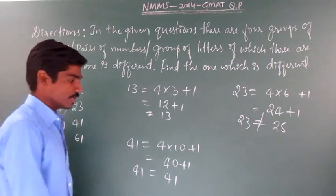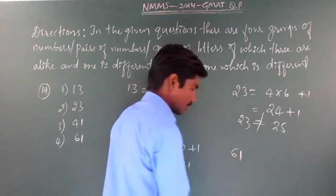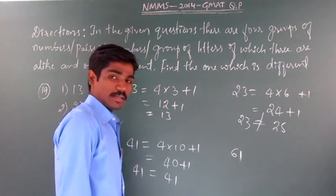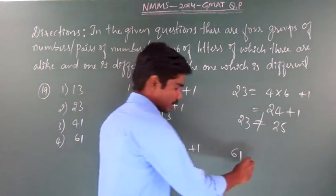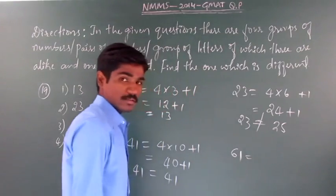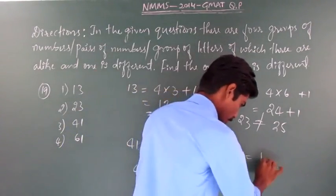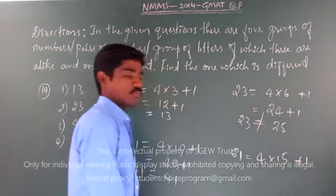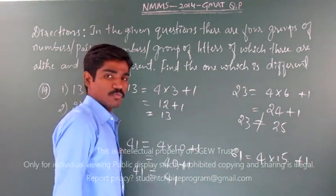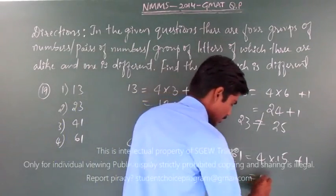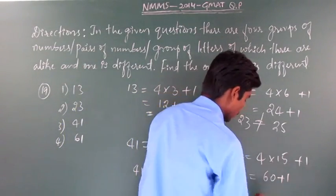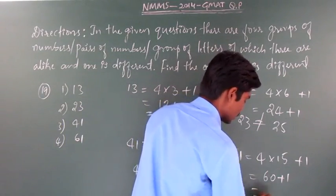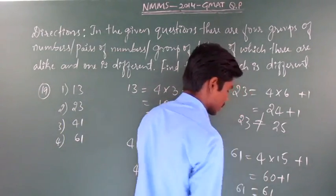Consider one more number, the last number, that is 61. Now 61, again I will write as a multiple of 4. How can I write this? Yes, of course, it is 4 into 15 plus 1. Now what is 4 into 15? 15 into 4 is 60 plus 1. So see here, 61 is equal to 61.